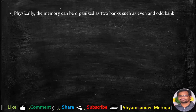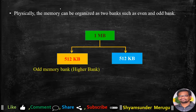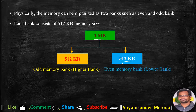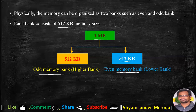Physically, the memory can be organized as 2 banks, known as the even and odd bank. The 1MB memory will be divided into 2 memory banks — one is the even memory bank and one is the odd memory bank. Each bank size will be 512KB, so the 1MB is divided equally into 2 parts, each getting 512KB of memory.